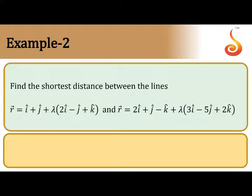Find the shortest distance between the two lines which are given: r̄ = î + ĵ + λ(2î - ĵ + k̂) and r̄ = 2î + ĵ - k̂ + λ(3î - 5ĵ + 2k̂).